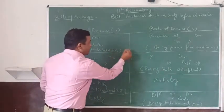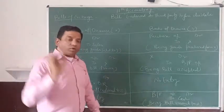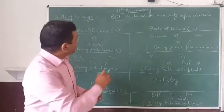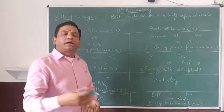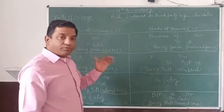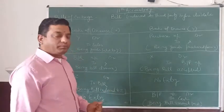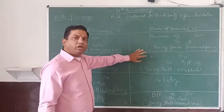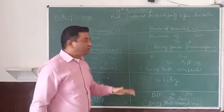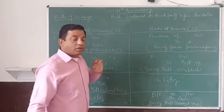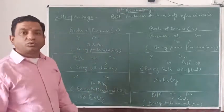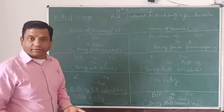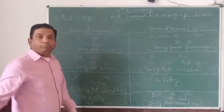These two entries will remain the same in all cases, whether the bill is being retained by the drawer up to the due date, endorsed to anyone, or any other treatment is applied. Now, suppose before the due date this bill is being endorsed to a third person by the drawer. If that third person is Z, the entry will be: Z Account debit to Bills Receivable.